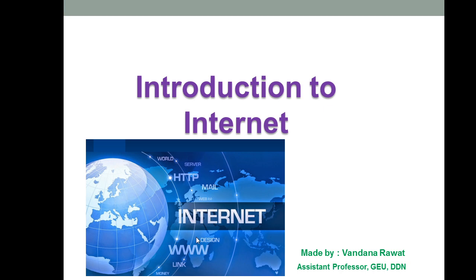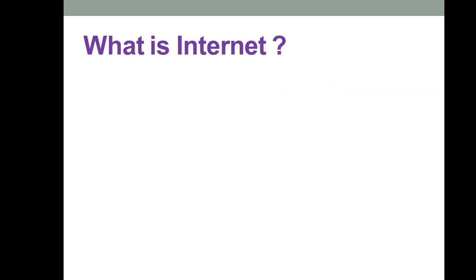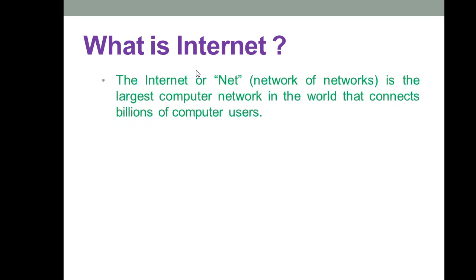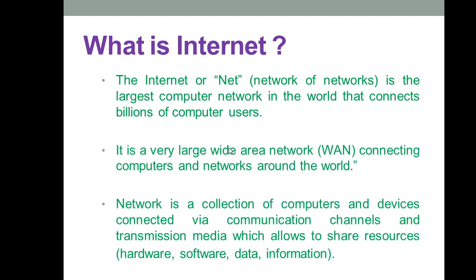This image shows a number of PCs connected within one network, which is known as the internet. Basically, the internet — or simply 'the net' — means the network of networks, because a number of computers are connected within this computer network. It is the largest computer network in the world, connecting billions of computer users across locations.